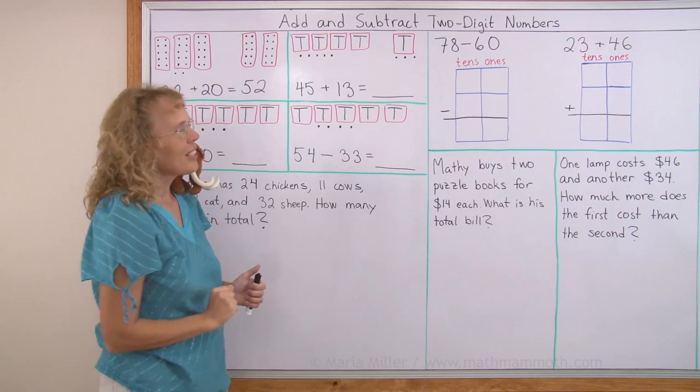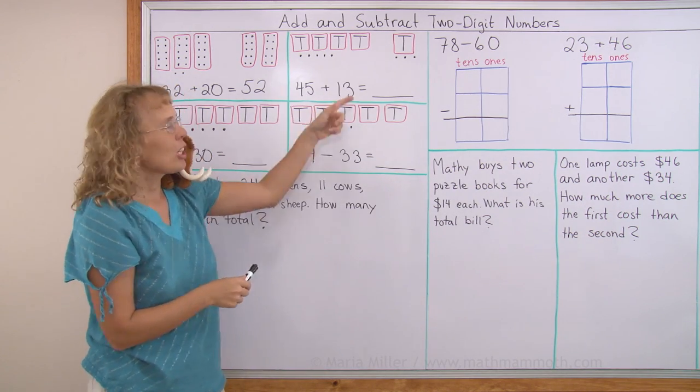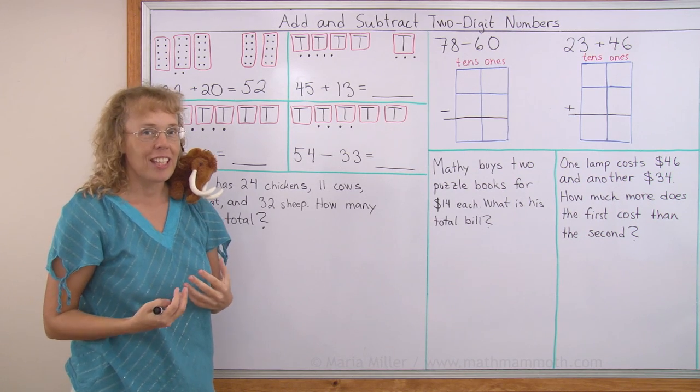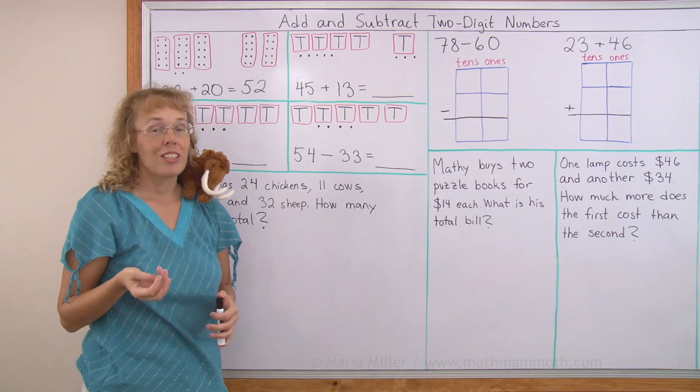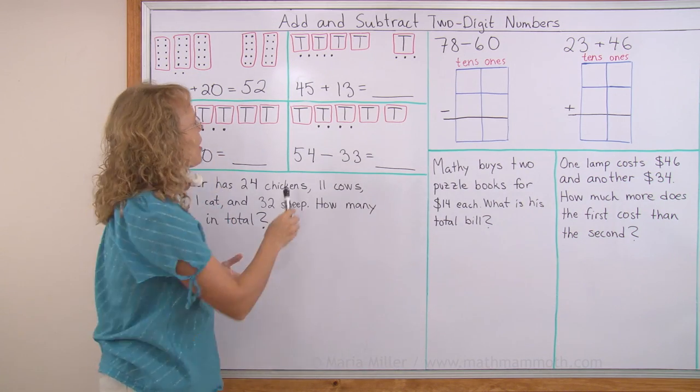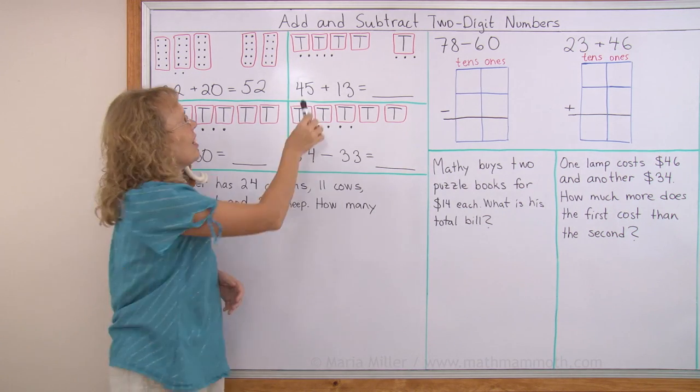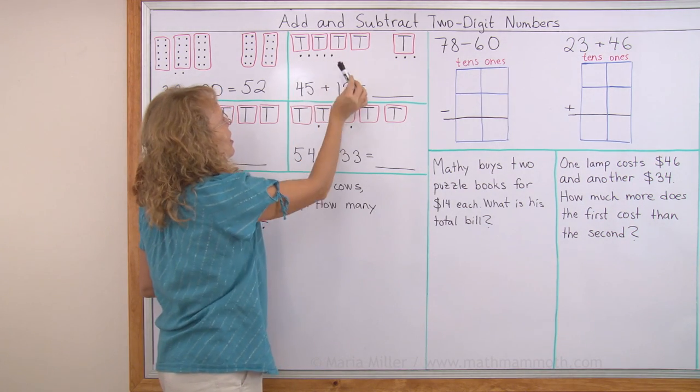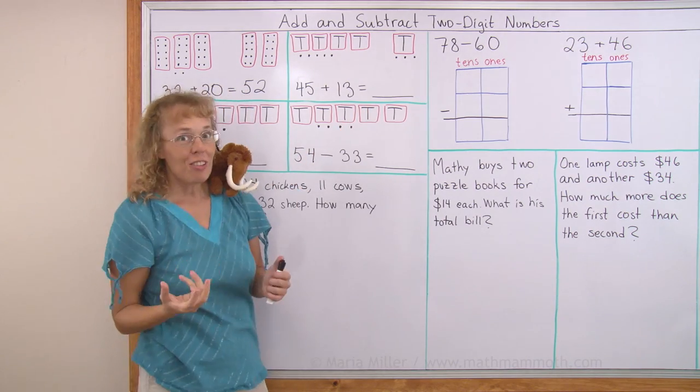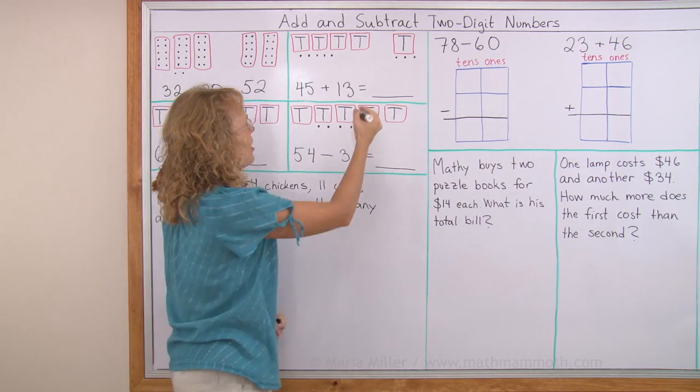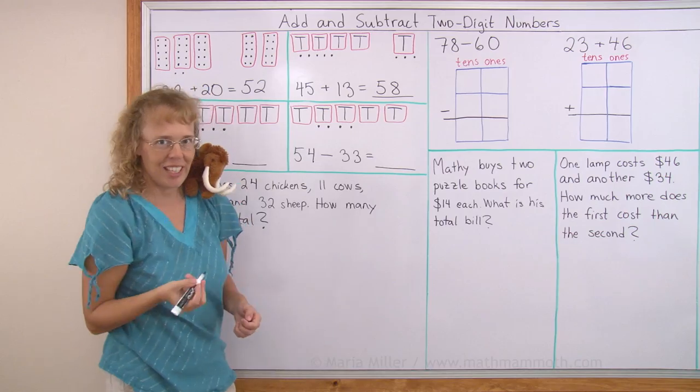Let's try this one. This is a little bit more difficult. 45 plus 13. It might look a little difficult if you're in first grade, but this model will help us solve it. And you could also use an abacus to help you solve it. 45 is pictured here. Remember that box with T is a ten. So I have four tens and five. 13 is one ten and three. So now in total I have five tens, right? And then I have five plus three, eight ones. So the answer is 58.